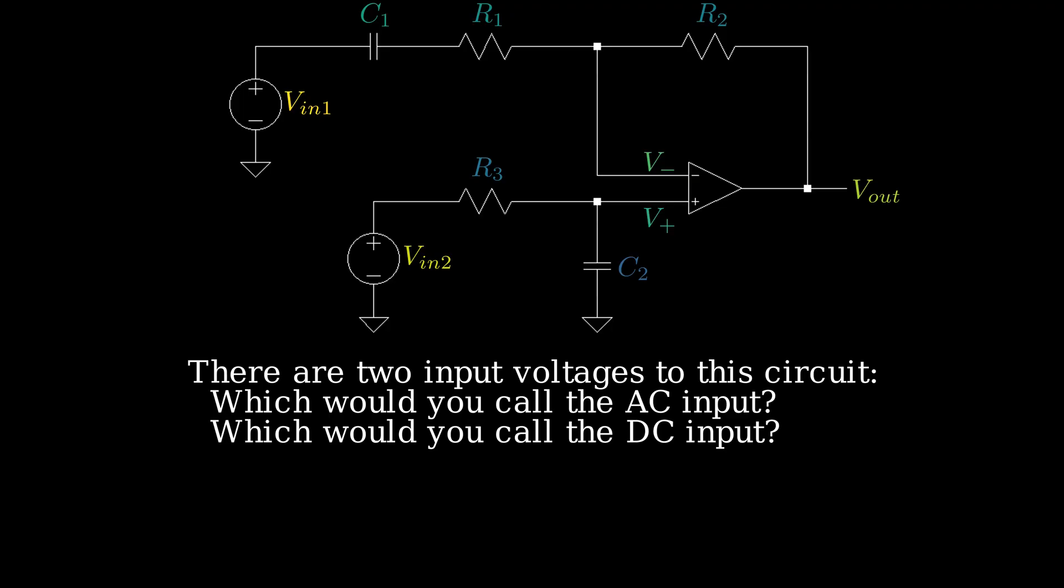You can also argue that R3 and C2 form a low-pass filter, meaning high frequencies from VIN2 would be filtered out, but the low-frequency components would remain.